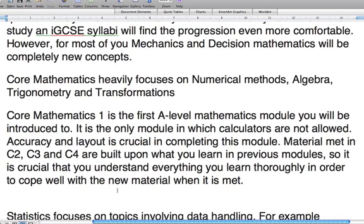The material in core one overlaps a great deal of what you've done at GCSE. Then C2, C3, and C4 build upon what you've learned in core one. So each time you continue to do one of these modules, you have got to make sure that you understand everything from the ones you've done before.